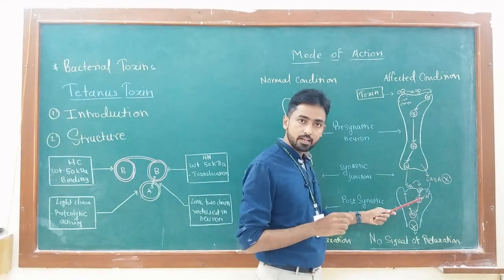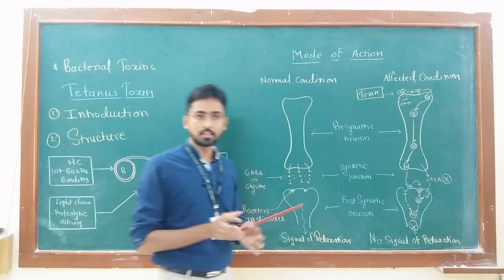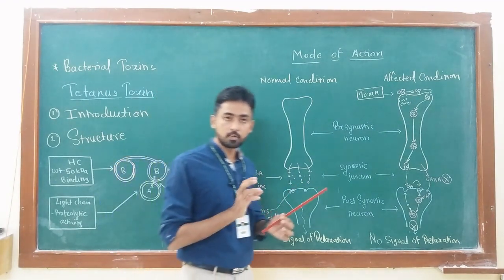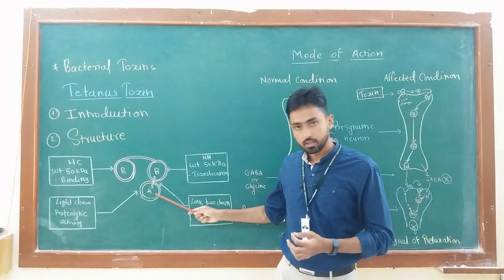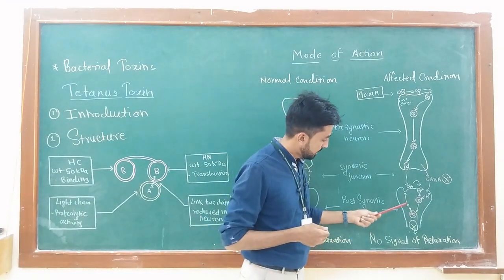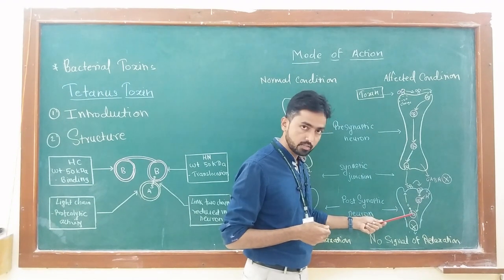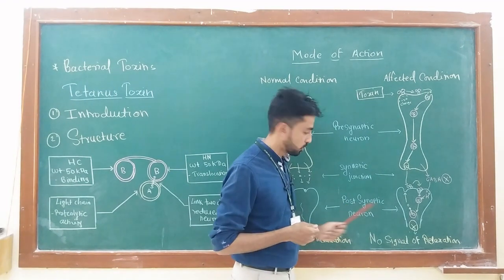Now in the postsynaptic neuron when the toxin is present in the endosome, then due to hydrogen ion pumping into the endosome, the pH of the vesicle is changed. Ion channels are produced, and through these ion channels the A subunit comes out of the endosome. Here you can see the A subunit released while the B subunit remains inside the endosome, inside the postsynaptic neuron.